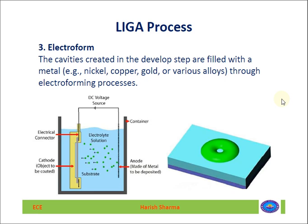After creating the cavities in the PMMA photoresist, the next process is electroforming — filling those cavities with metal. Metals such as nickel, copper, gold, or various alloys can be used. In electroplating, the substrate is held in a clamp holder, and the material to be deposited is used as the positive electrode. Metal ions move from the positive electrode into the cavity, filling it completely.